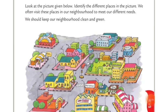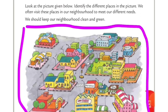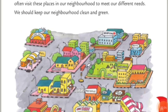Look at the picture given below. Identify the different places in the picture. We often visit the places in our neighborhood to meet our different needs. We should keep our neighborhood clean and green. Yeh picture mein alag-alag places hai jahan hum log jaate hai. Humare needs poori karne ke liye hum wahan jaate hai. Aur humein apna neighborhood clean and green, saaf sutra aur harabhara rakhna hai.